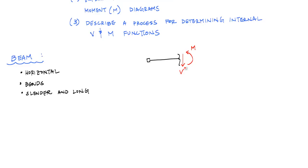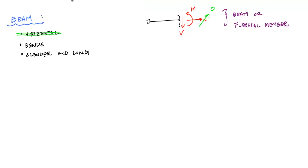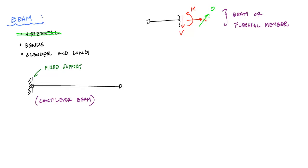A beam is a beam if the member has an internal moment and a shear on the inside. If we have flexure and shear, that is how we typically define a beam. The axial force is considered negligible. It doesn't matter if it's horizontal or not. For instance, one type of beam you may have seen in statics is a cantilever beam — one end is fixed.